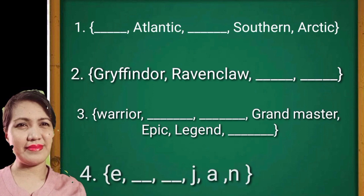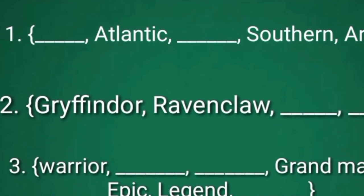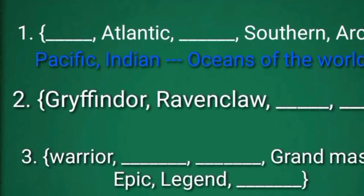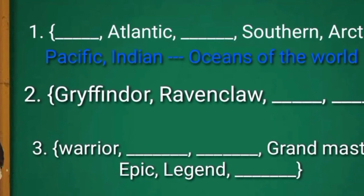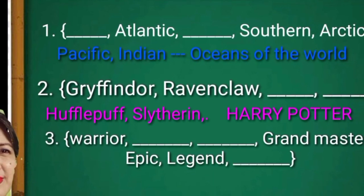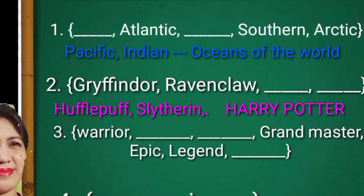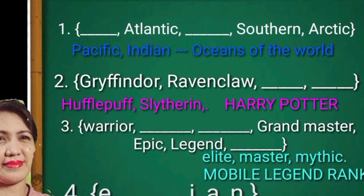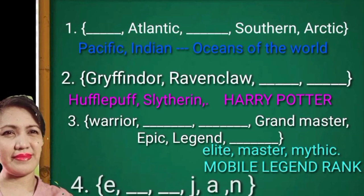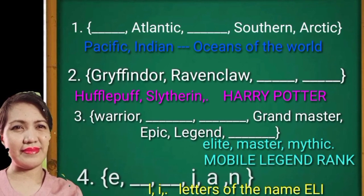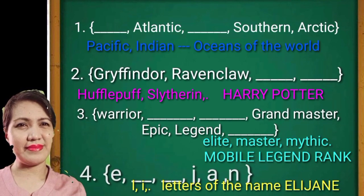Supply the missing elements of each set, then describe what kind of set is being formed. The missing elements in number 1 are Pacific and Indian — this set is known as the Names of the Oceans of the World. For number 2, the missing elements are Hufflepuff and Slytherin, the characters from Harry Potter. Number 3 — Elite, Master, and Mythic are the ranks from Mobile Legends. And lastly, L and I are the missing elements from the letters of the name Ellie Jane.